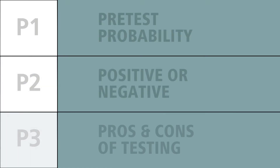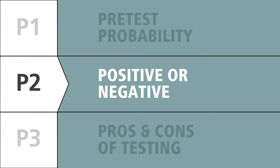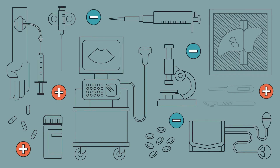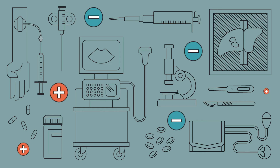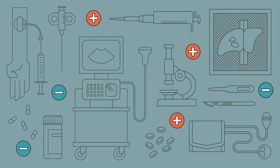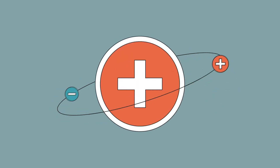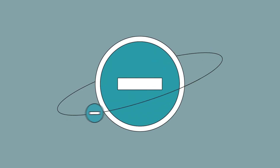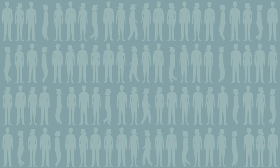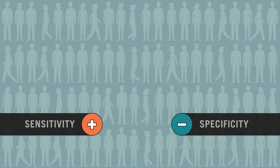Let's return to the three P's framework. The second P reminds us that the probability changes with a positive or negative result based on the clinical sensitivity and specificity of a test. While many diagnostic tests perform well, none are perfect. Doctors must take many factors into consideration when determining the meaning of a test result. This means a positive result does not always indicate a patient has a disease, and a negative result does not always indicate a patient does not have a disease. To understand the validity of a test, or what a test can and cannot tell us, doctors rely on a test's specificity and sensitivity.